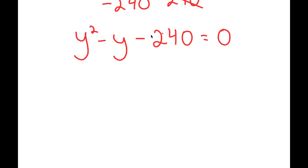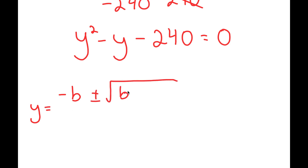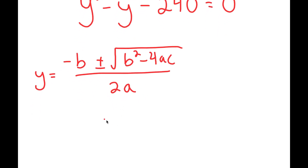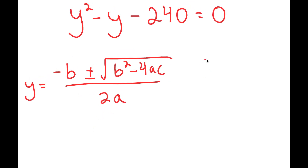Now I can use the quadratic formula to find the value of y. The quadratic formula is negative b plus or minus the square root of b squared minus 4ac, all over 2a. So in this case, a is 1, b is negative 1, and c is negative 240.